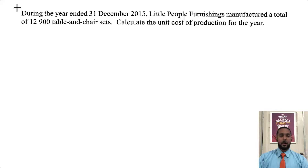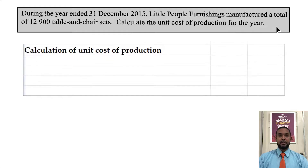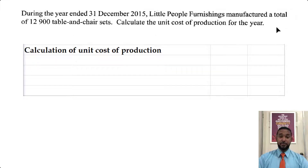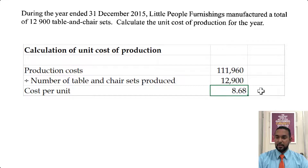One more part: during the year ended 31st December 2015, Little People Furnishings manufactured a total of 12,900 table and chair sets. Calculate the unit cost of production. The unit cost of production is the cost per unit, so we take the total cost of production from the manufacturing account and divide by 12,900, giving us approximately $8.68 per unit.